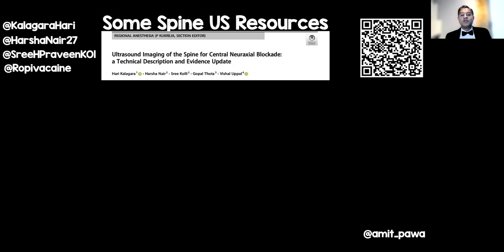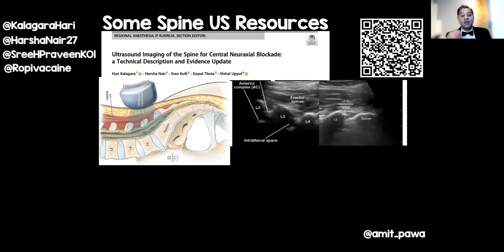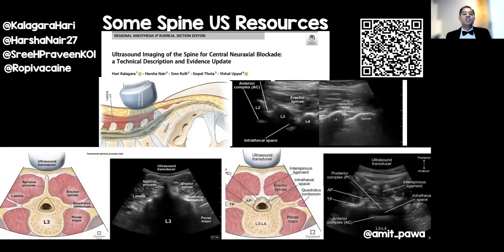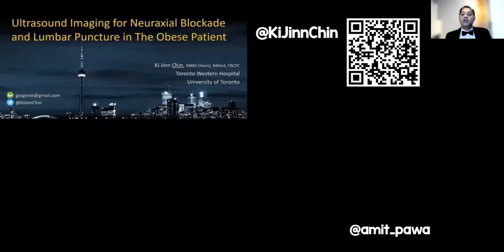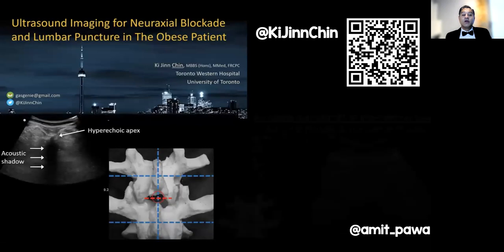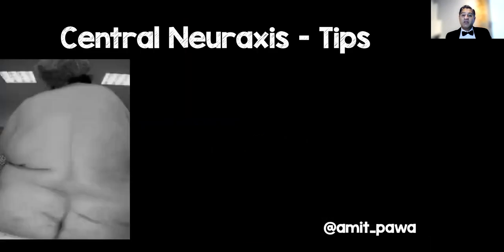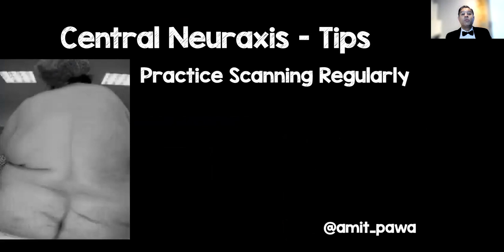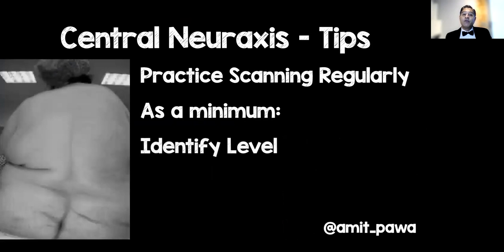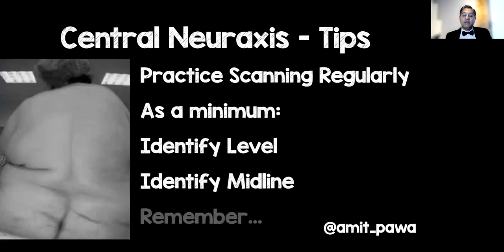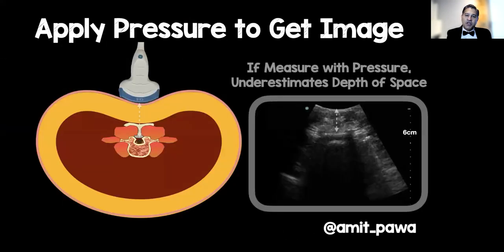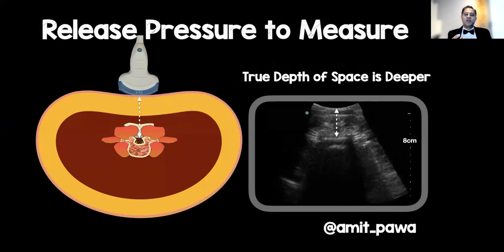There are great ultrasound spine resources, including a paper by Harry Kalagra and colleagues describing the views needed to get a good image of the spine, and a video by Kijin on YouTube with tips and tricks. It's worthwhile scanning regularly in patients of all sizes. At minimum, identify the level you're placing the block, identify the midline, and remember — pressure applied to generate the image will underestimate the depth of the space. Release the pressure just before measuring to get a true estimate.